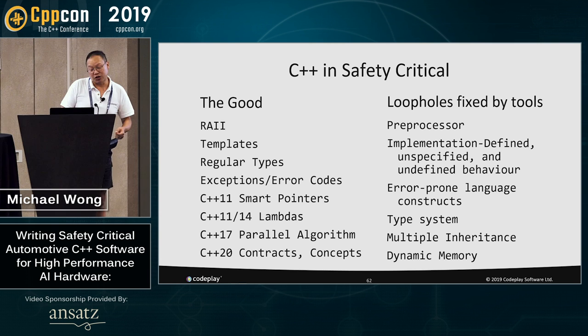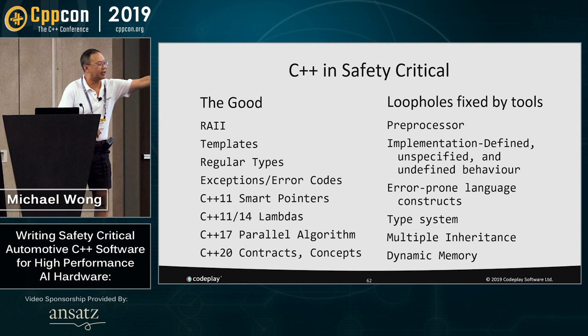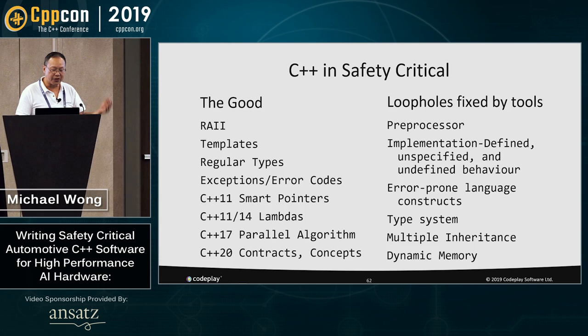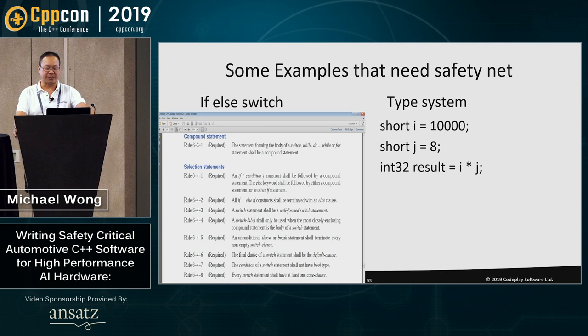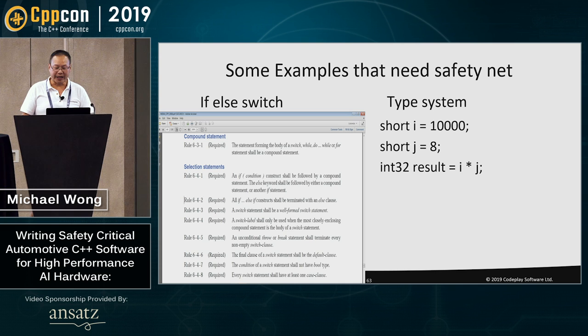C++ also has some loopholes, and it is the job of either the standard committee or the safety guidelines to put a line on these loopholes and tell you whether you should cross them or not. One important example is the type system. The type system in C++ has loopholes that make it somewhat easy to circumvent. Coding safety standards severely restrict the use of implicit or explicit type conversions like casts, because these can cause loss of information. The standard doesn't define fixed sizes for built-in types, making it harder to write portable code requiring fixed-size integers.